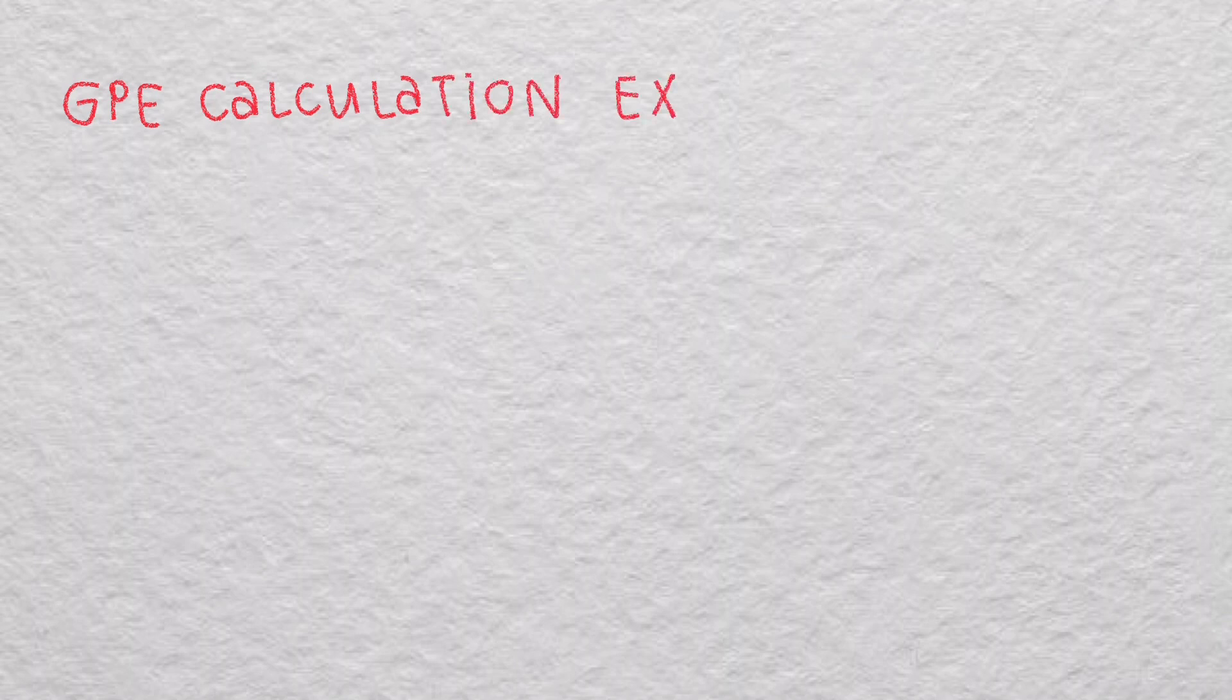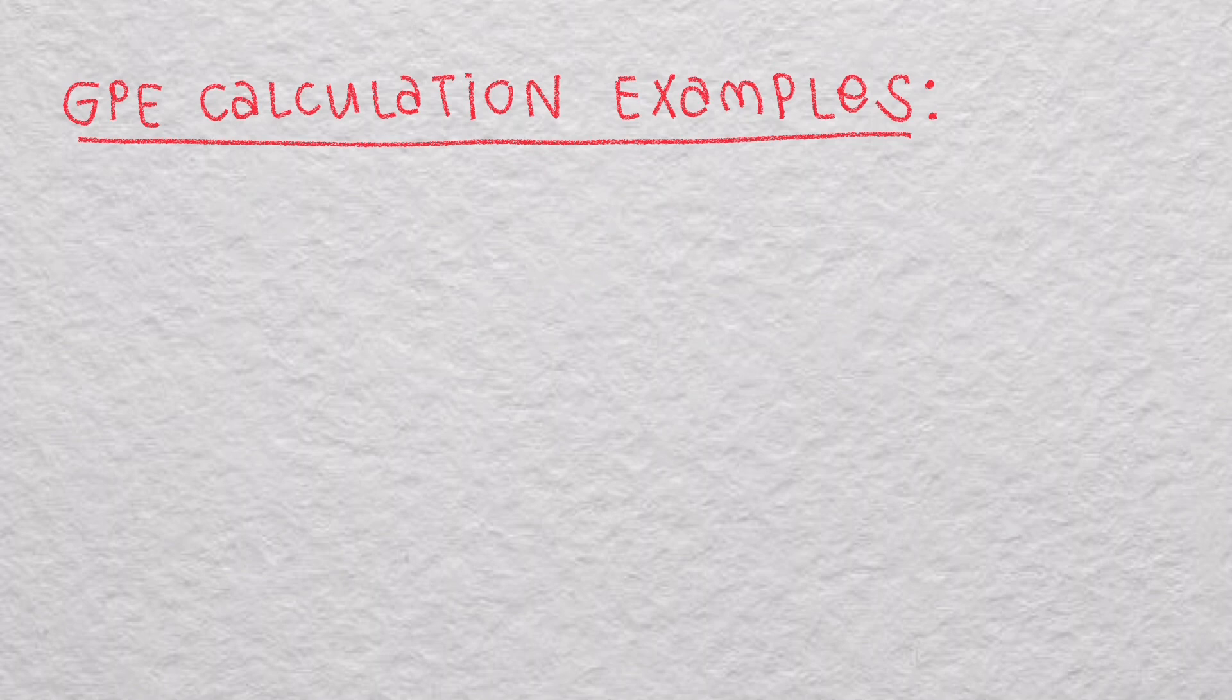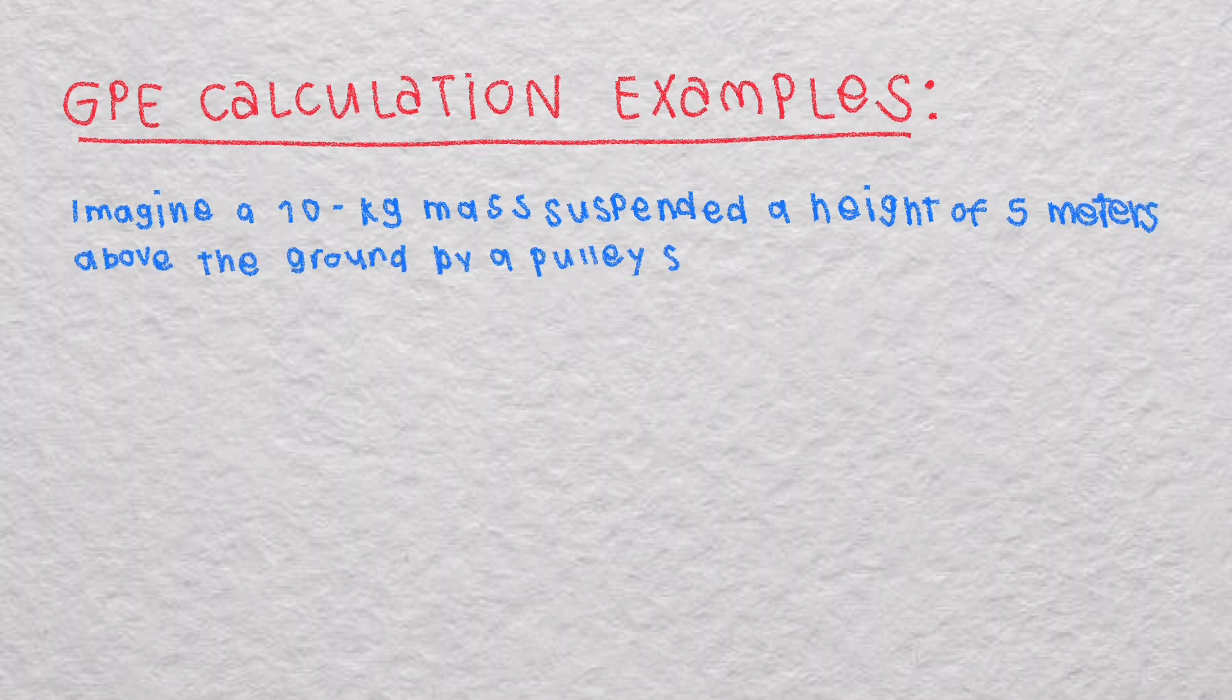So here are some of the questions of GPE and how to calculate them. Imagine a 10 kg mass suspended at a height of 5 meters above the ground by a pulley system. How much gravitational potential energy does it have?